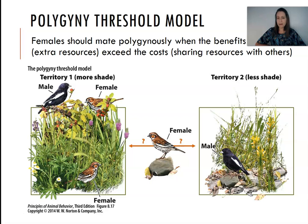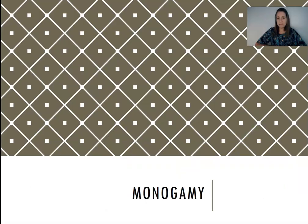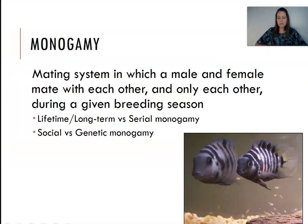Looking at an example with birds — if a male has an abundance of shade and food, and he already has two females on his territory, would it be beneficial for a new female to join even though there are already two others there? That depends on her other options. If her other option is a suboptimal territory with less shade and fewer resources, she may actually choose to be polygamous rather than monogamous. So this model is considered when comparing polygamous and monogamous mating systems, because sometimes it may be beneficial to actually be monogamous.